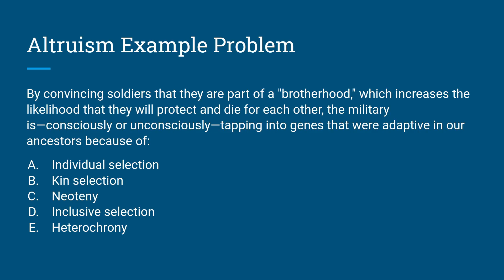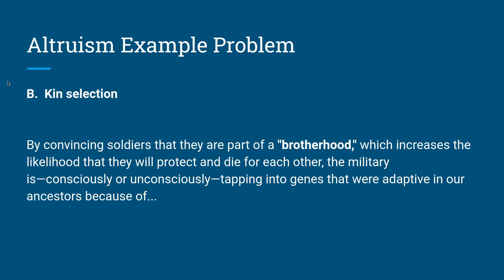Here's a real USABO example question: 'By convincing soldiers that they are part of a brotherhood, which increases the likelihood they will protect and die for each other, the military is consciously or unconsciously tapping into genes that were adaptive in our ancestors because of...' This is kin selection — altruistic behavior that helps related individuals or family. The brotherhood framing in the question signifies they're probably kin, and the altruistic behaviors of trying to protect and die for each other benefit the fitness of others rather than your own.